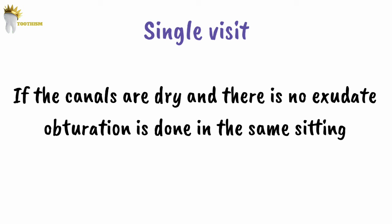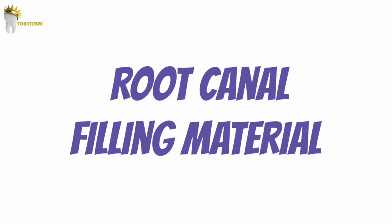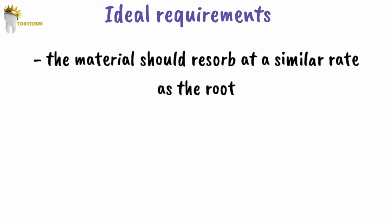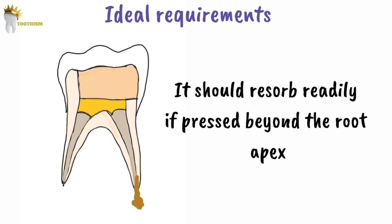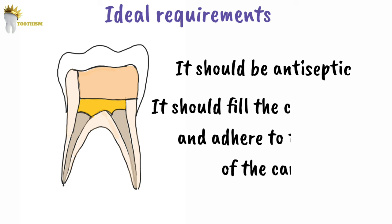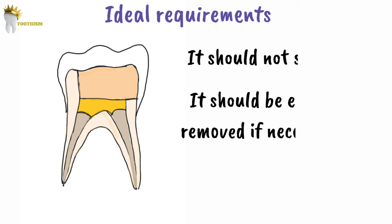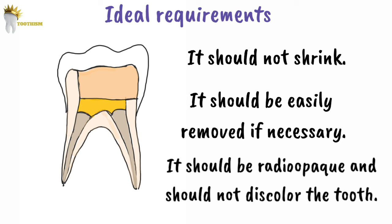Now, the ideal requirements for root canal filling materials for primary teeth: the material should resorb at a similar rate as the primary root; it should be harmless to the periapical tissues and the permanent tooth bud; it should resorb readily if pressed beyond the apex; it should be antiseptic; it should fill the root canals easily and adhere to the walls; it should not shrink; it should be easily removed if necessary; and it should be radiopaque and not discolor the tooth. No material currently available meets all of these criteria. The most commonly used filling materials are zinc oxide eugenol paste, iodoform paste, and calcium hydroxide.